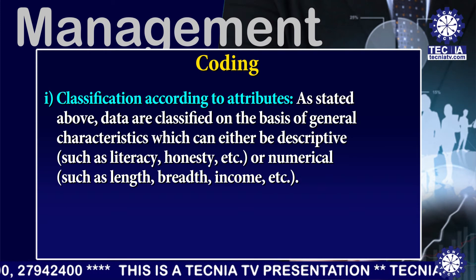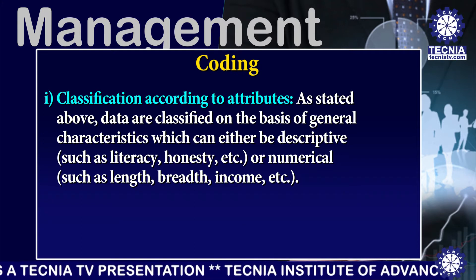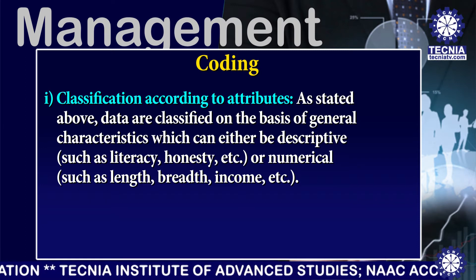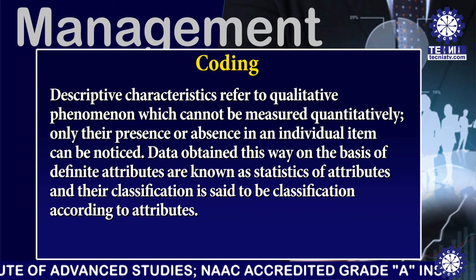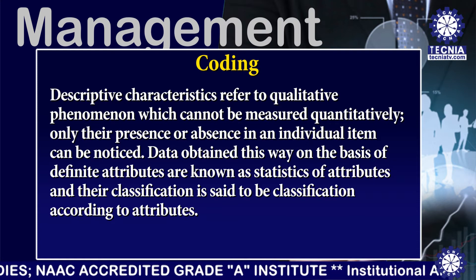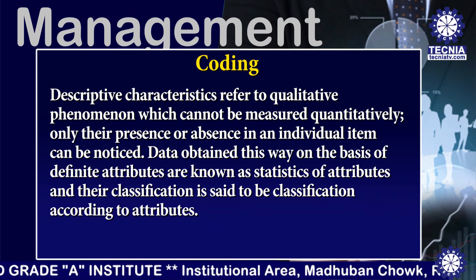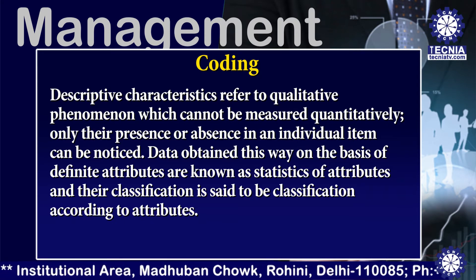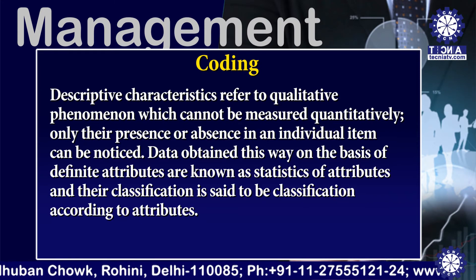The first type is classification according to attributes. Data are classified on the basis of general characteristics, which can either be descriptive — such as literacy, honesty, etc. — or numerical, such as length, breadth, income, etc. Descriptive characteristics refer to qualitative phenomena which cannot be measured quantitatively; only their presence or absence in an individual item can be noticed. Data obtained this way are known as statistics of attributes, and their classification is said to be classification according to attributes.